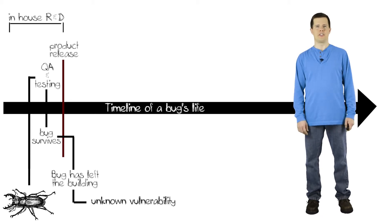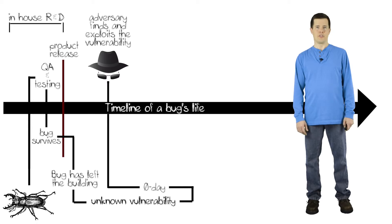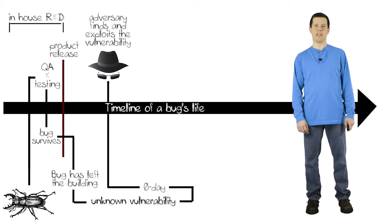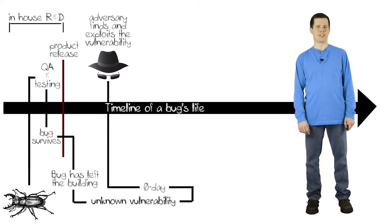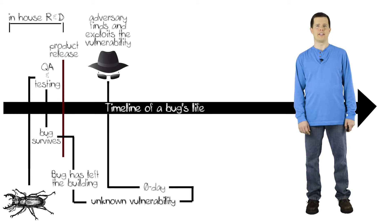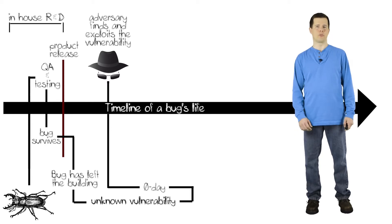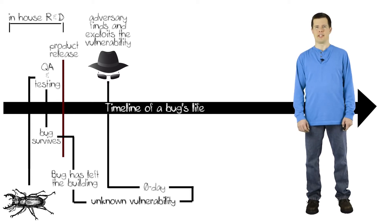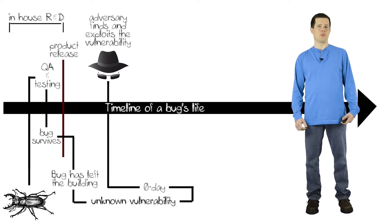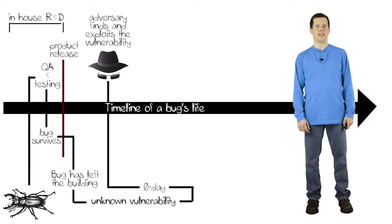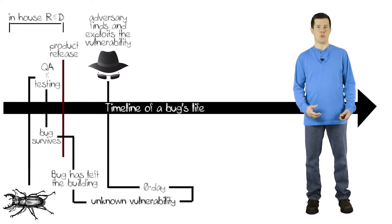Until, at some point later in time, an attacker or a black hat of some kind finds this bug. Maybe they're doing fuzzing in their secret hacker lab and they find this vulnerability. Then they do some more work on it and maybe they're able to create an exploit — meaning they can send an input to this software that allows them to run their own code inside that product through that vulnerability.